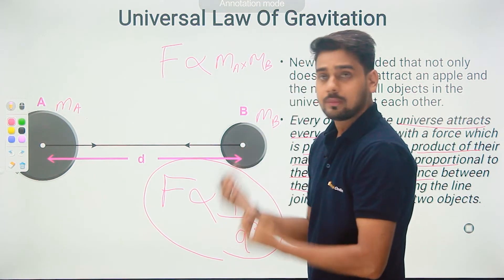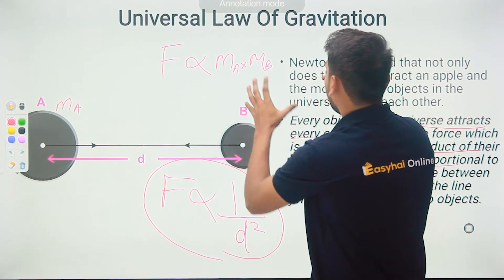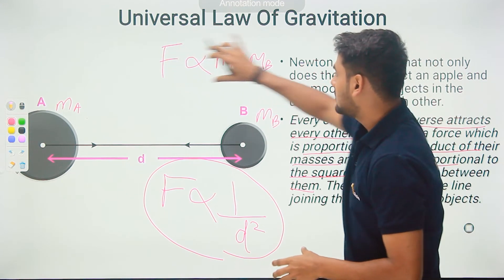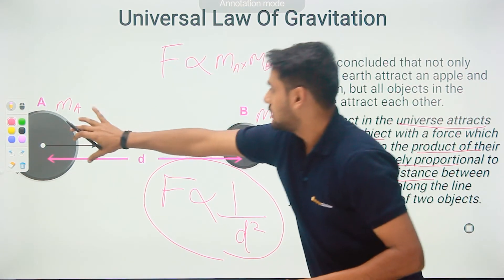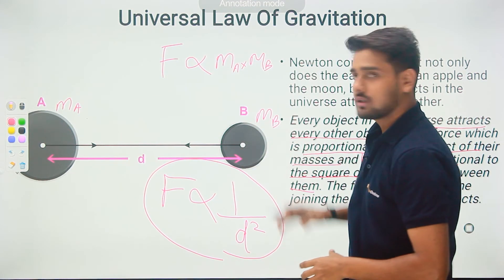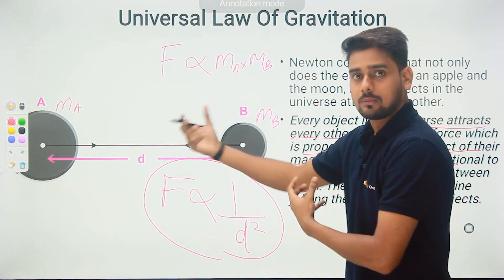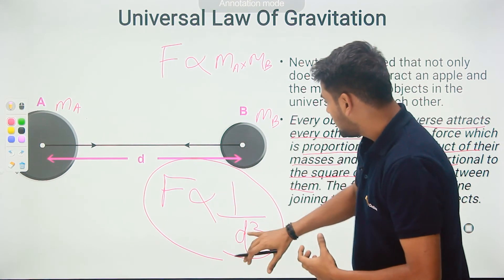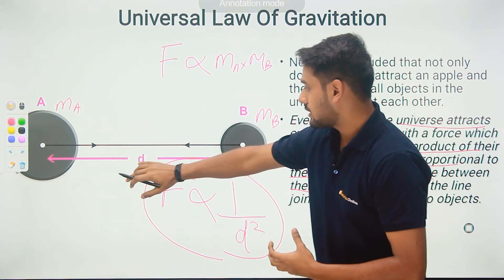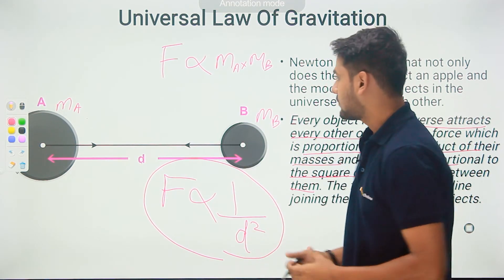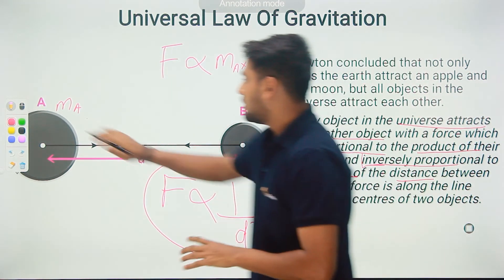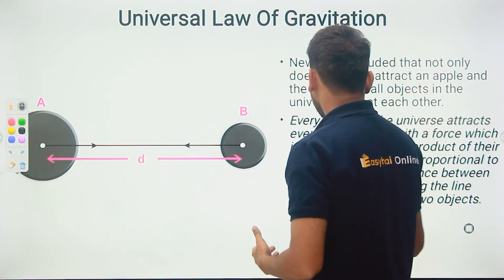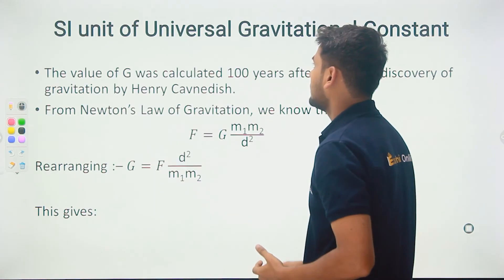The further equation we derive is just a consequence of this, but in reality, at the core, the main law is: F is directly proportional to the product of the masses and inversely proportional to the square of the distance. There you have the universal law of gravitation.